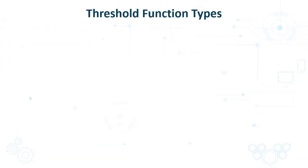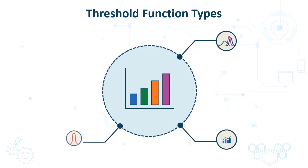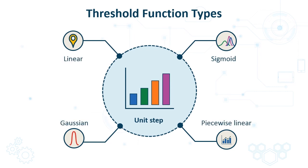Now that we are aware of the concept of threshold functions and their utilization, let's explore the prominent types of threshold functions. There are five types of threshold functions that we can use in artificial neural networks, and they include unit step, sigmoid, piecewise linear, Gaussian, and linear.